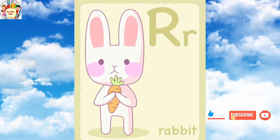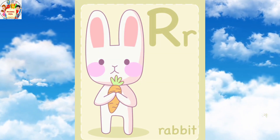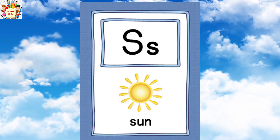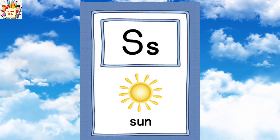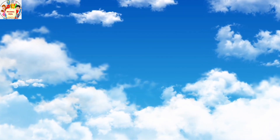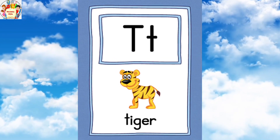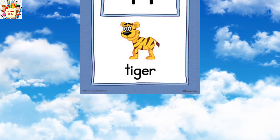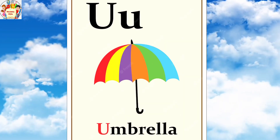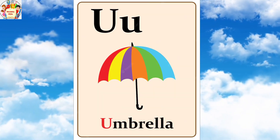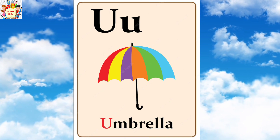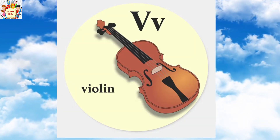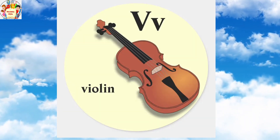R for rabbit. S for sun. T for tiger. U for umbrella. V for violin.